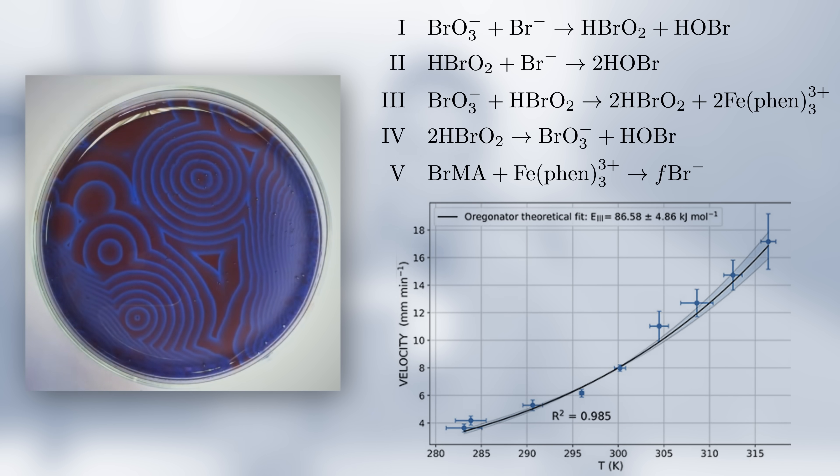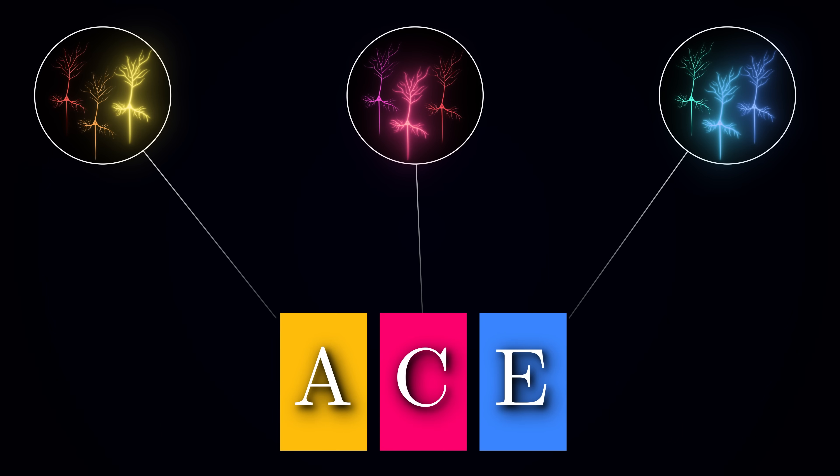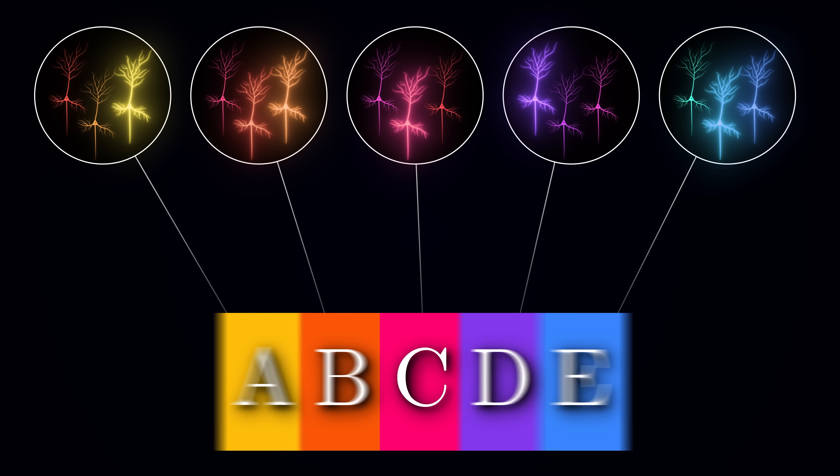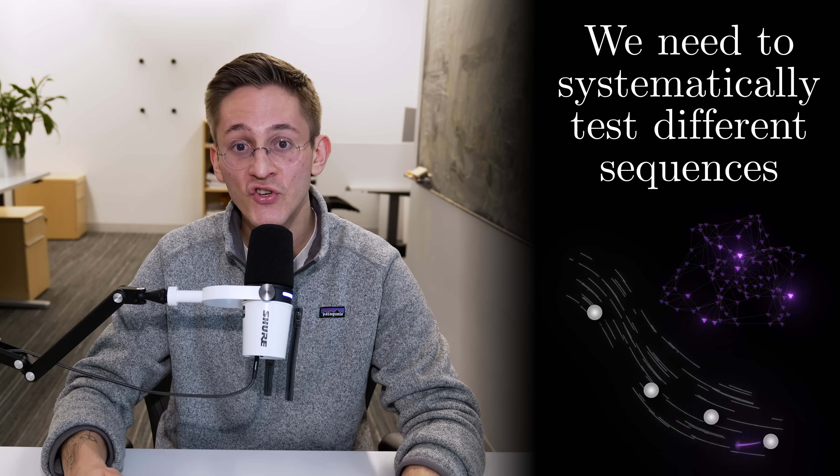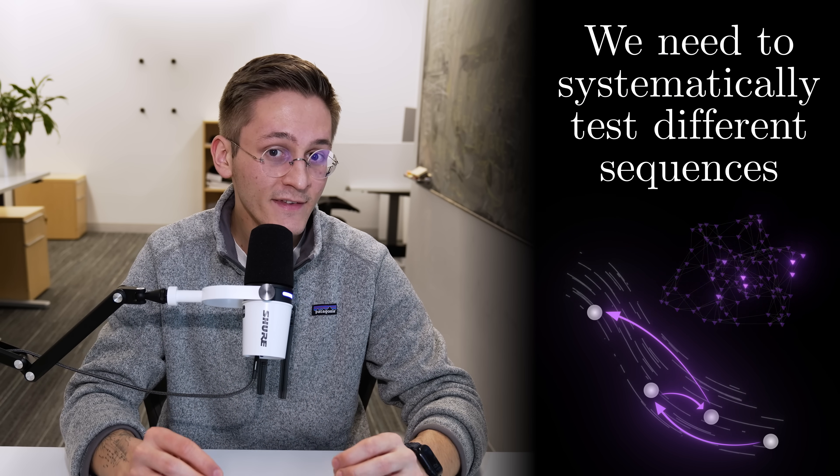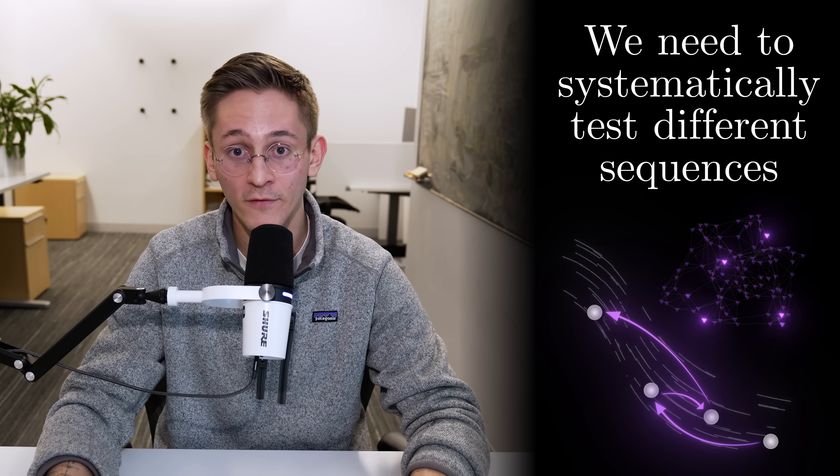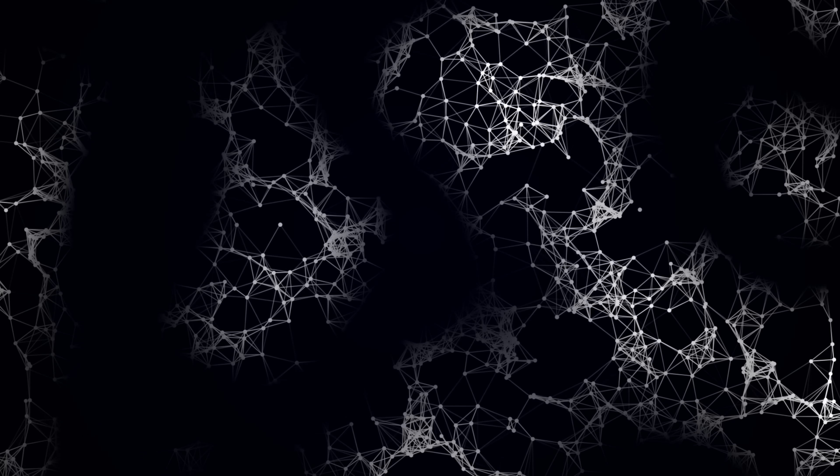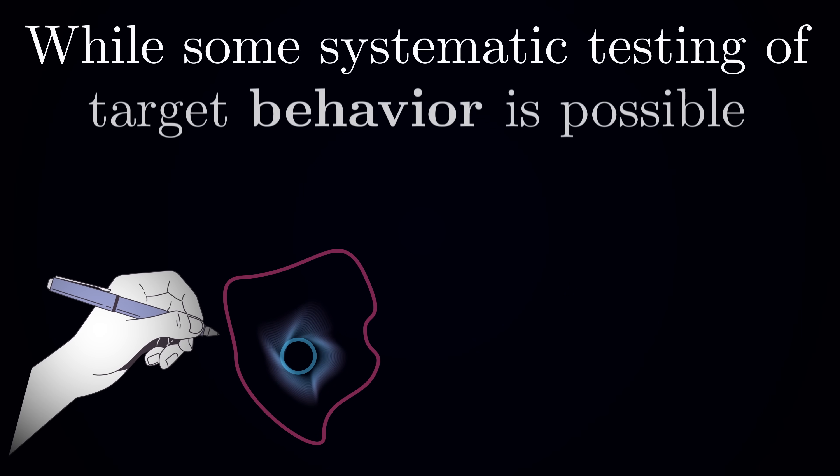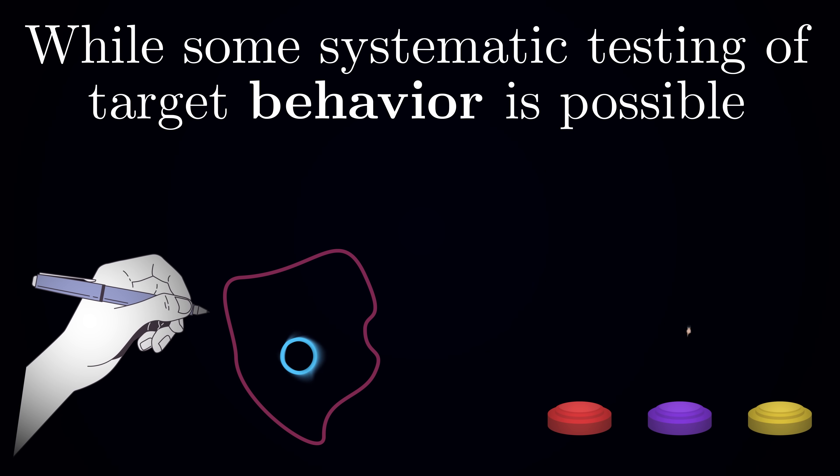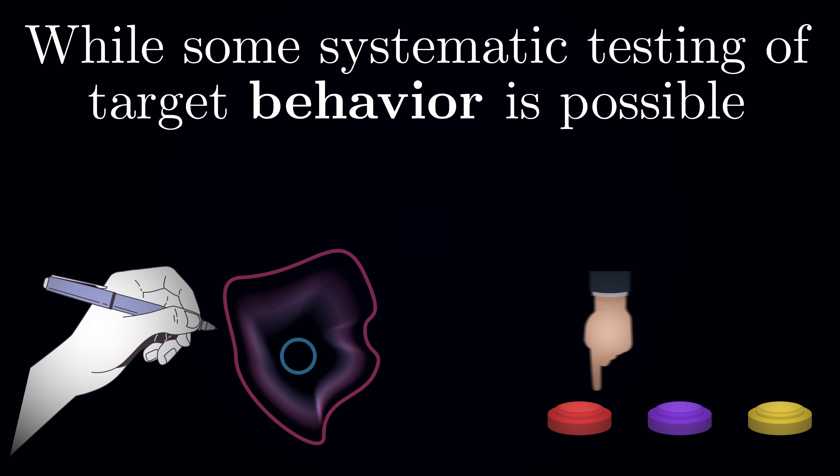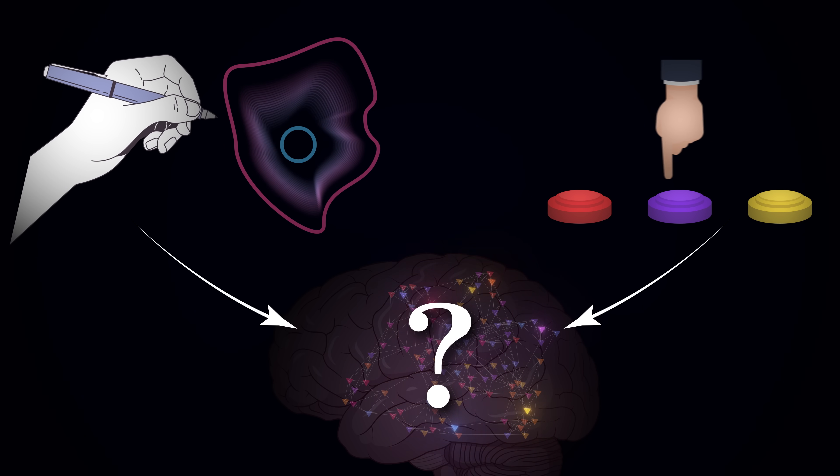But when it comes to neural activity, we face a unique challenge. To understand what patterns are hard to learn, we want to systematically test different neural sequences. Maybe start with simple patterns, then try increasingly complex ones, reverse them, shuffle them, speed them up, or slow them down. The point is that we want to carefully control which neural sequences our subject is trying to learn to test specific hypotheses about what makes some patterns harder than others. But there is a fundamental problem. While we can do some kind of systematic testing at the behavioral level, like asking the subject to draw shapes of increasing complexity or learn to press buttons in a specific sequence, we have no way of knowing what neural pattern each behavior will result in.